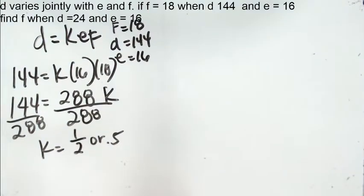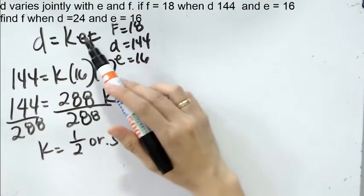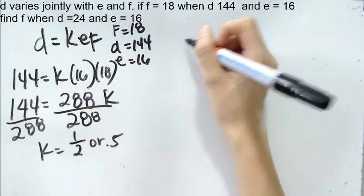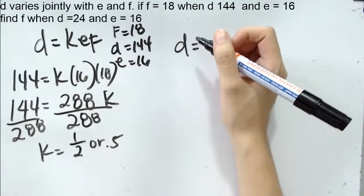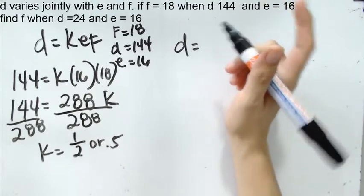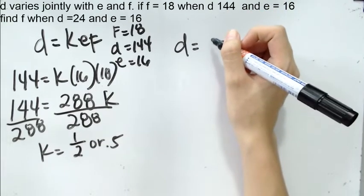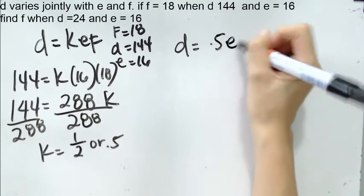And then afterwards, we go back to the given equation or the given situation. Find F when D is 24 and E is 16. We go back here with the equation, but this time around we are going to change the value of K into 0.5 or one-half. I prefer working with decimal. D equals 0.5EF.